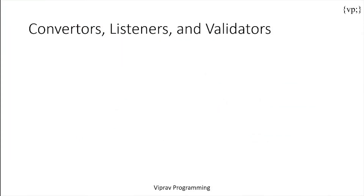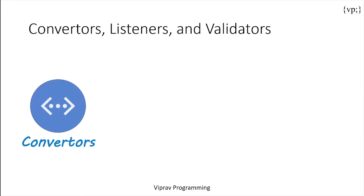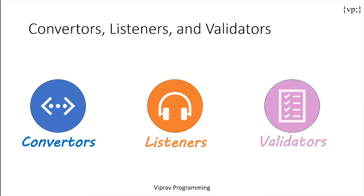So first of all, let's go over what converters, listeners, and validators are. Converters are used to convert data being received. Listeners are used for listening to events happening on the page and perform actions as defined by you. And validators are used to make sure that the data received has met some requirement before being processed.